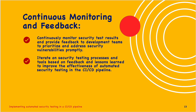Next is continuous monitoring and feedback. Continuously monitor security test results and provide feedback to development teams to prioritize and address security vulnerabilities promptly. Iterate on security testing processes and tools based on feedback and lessons learned to improve the effectiveness of automated security testing in the CI/CD pipeline.